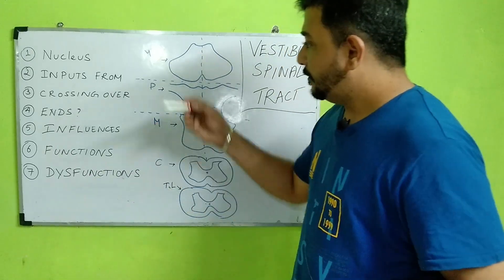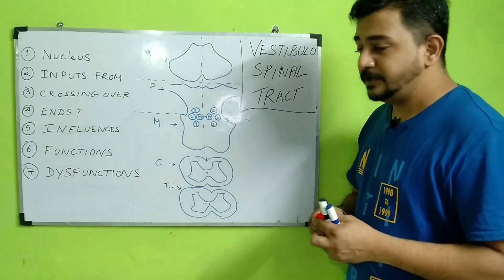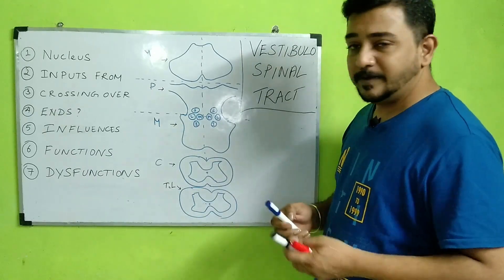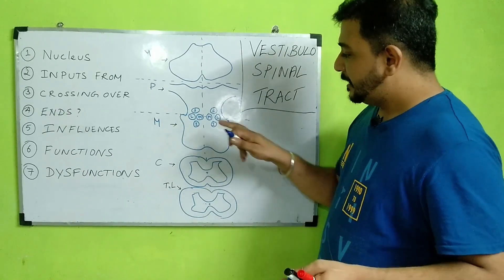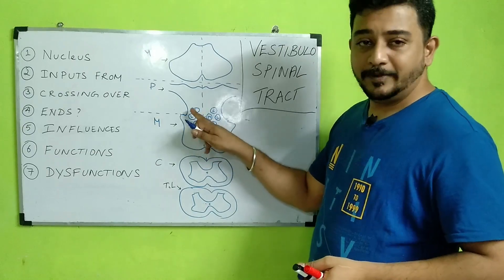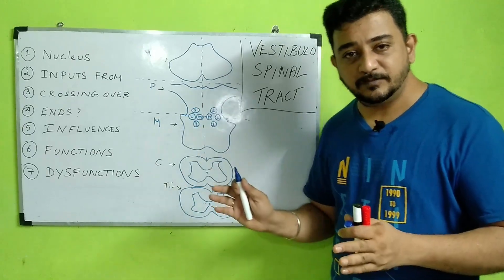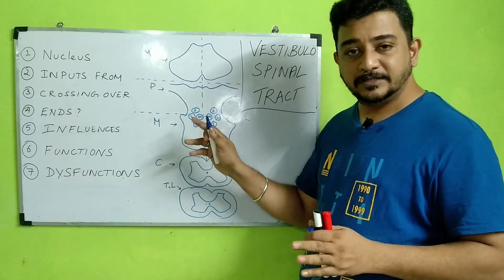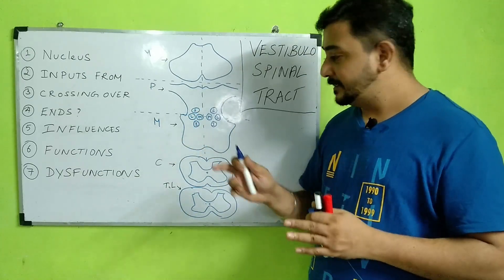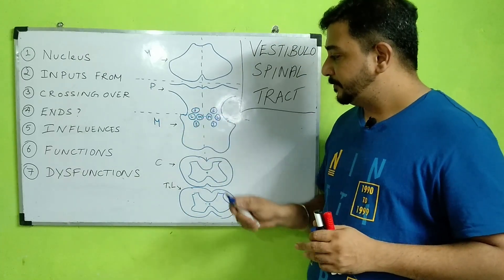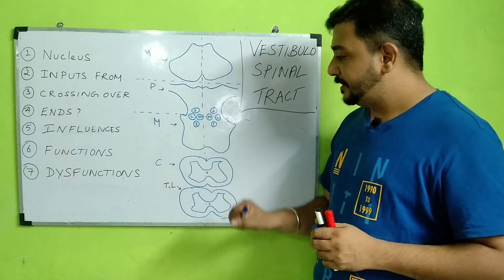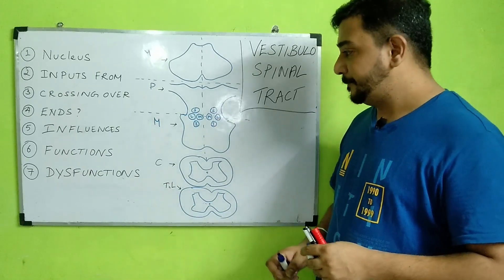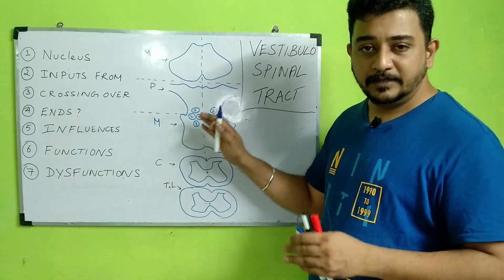The nucleus of the vestibulospinal tract is in the vestibular nucleus complex. We call it a complex because there are four nuclei clubbed together: the superior, the inferior, the lateral, and the medial. These four nuclei are there, and from here the vestibulospinal tract arises.